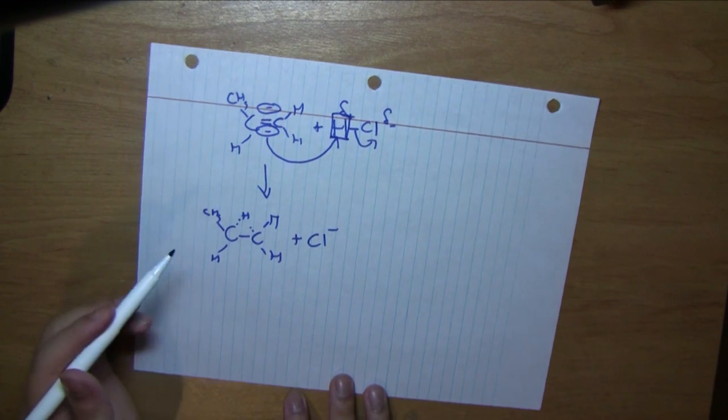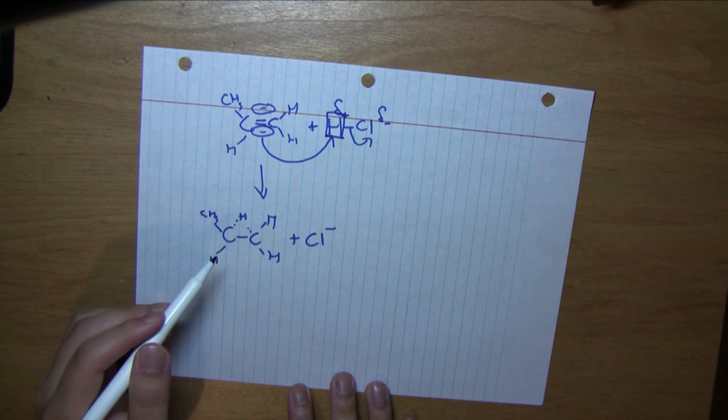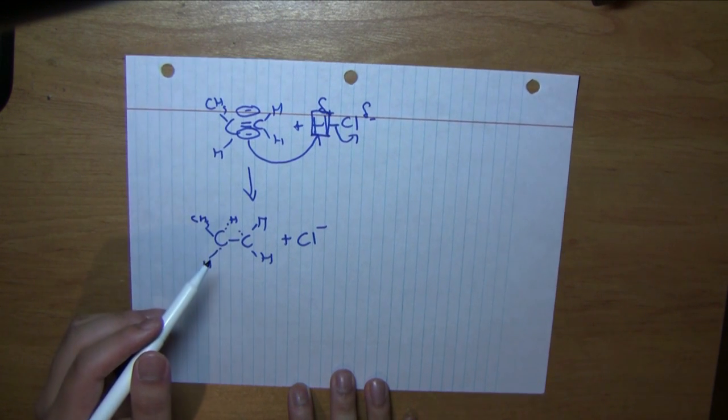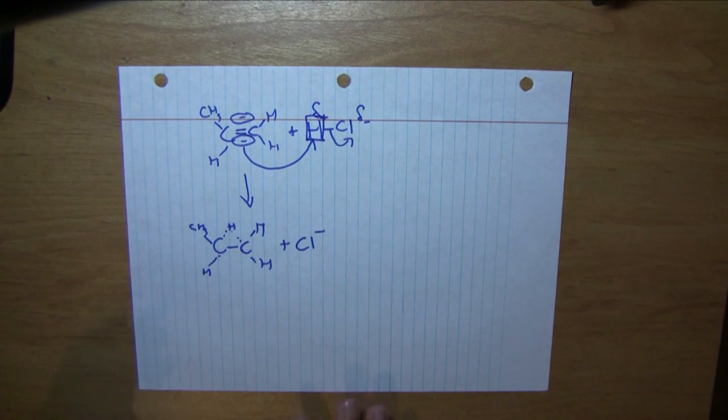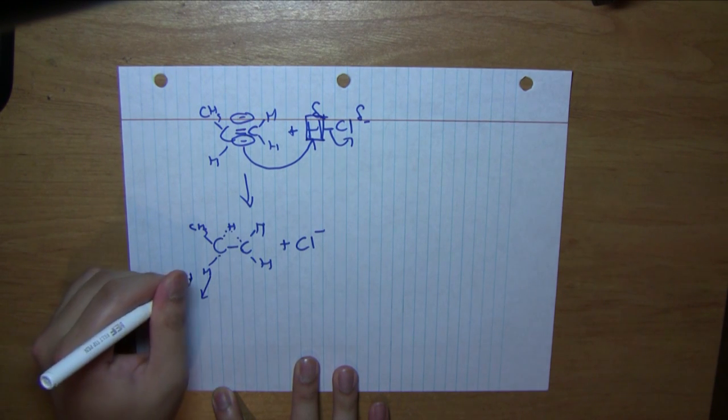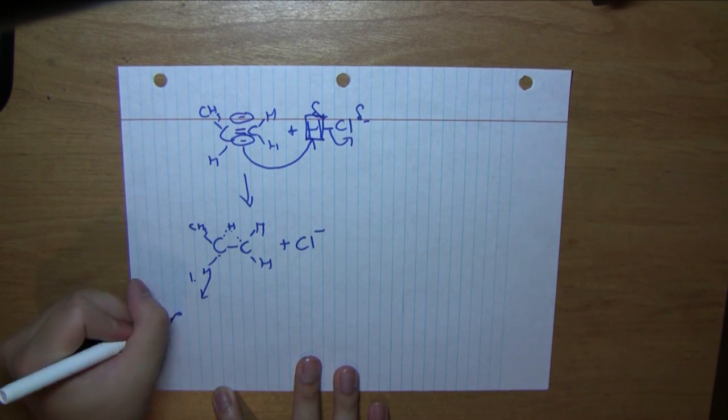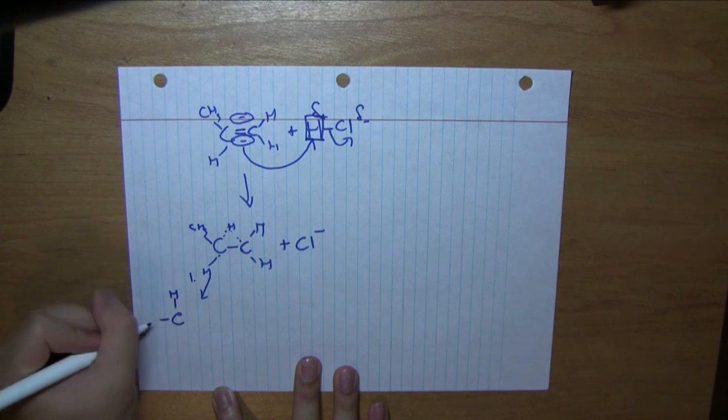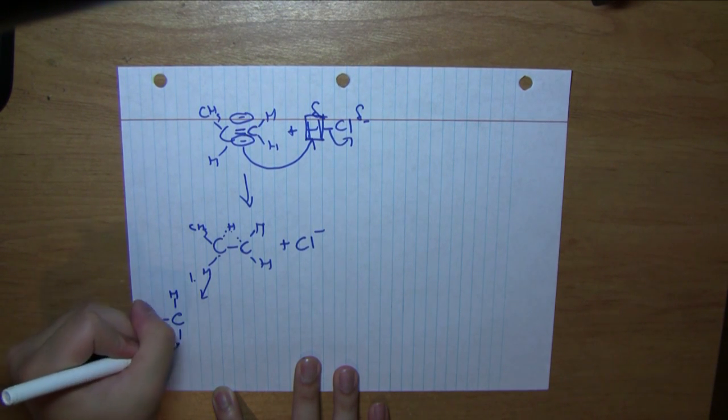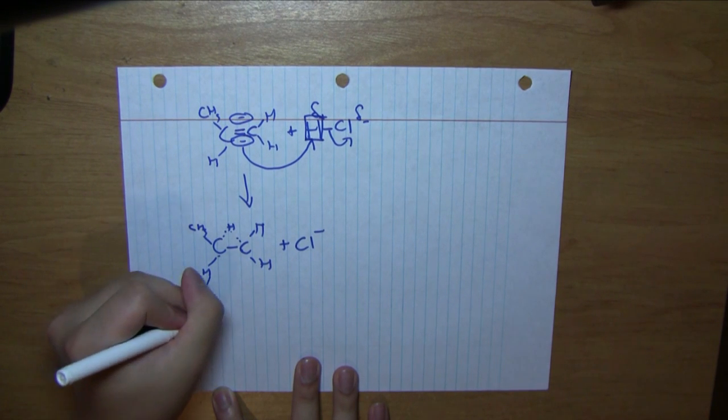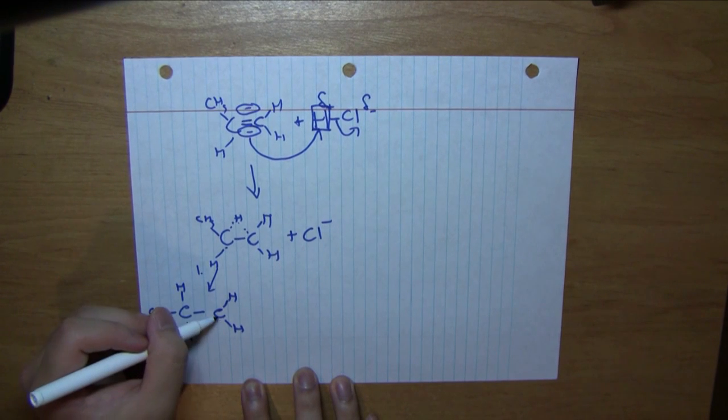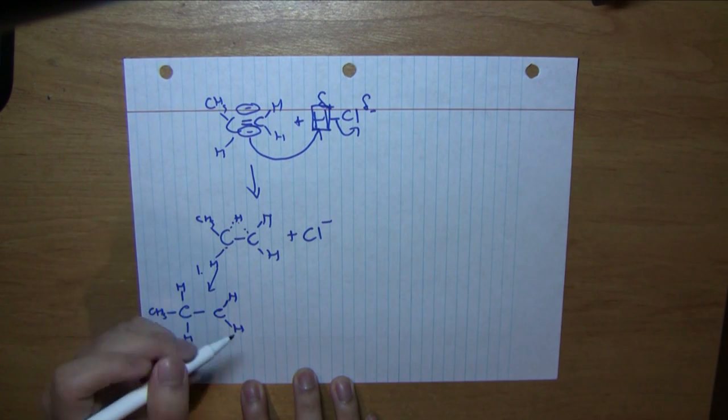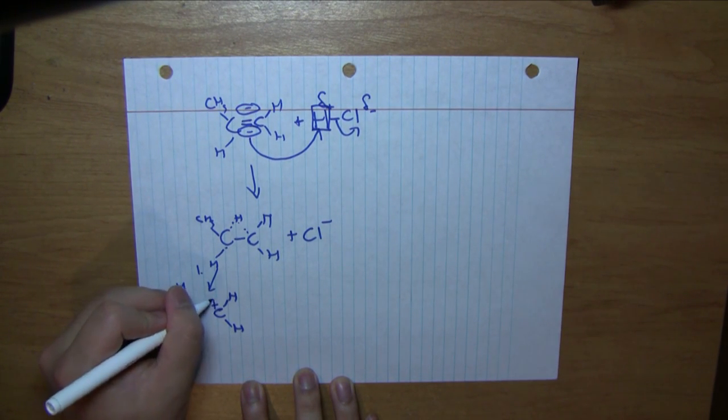Let's have two different cases: one with the proton bonded to the left carbon and another with the proton bonded to the right carbon, and see which forms a more stable carbocation. In the first case, if the proton bonds to the left carbon, we'd have the left carbon with one methyl group and two hydrogens, and the right carbon with just two hydrogens. Because this carbon only has three valence electrons, it has a formal charge of plus one.